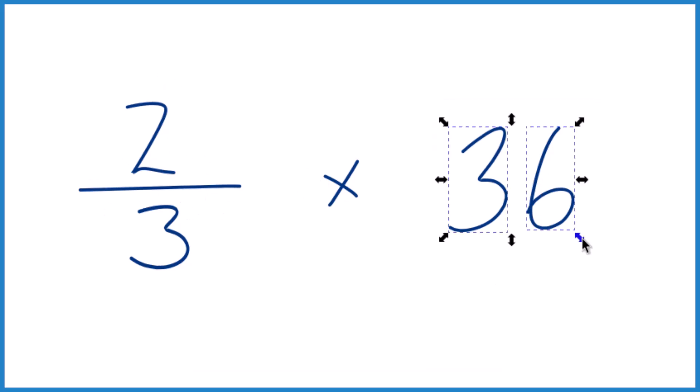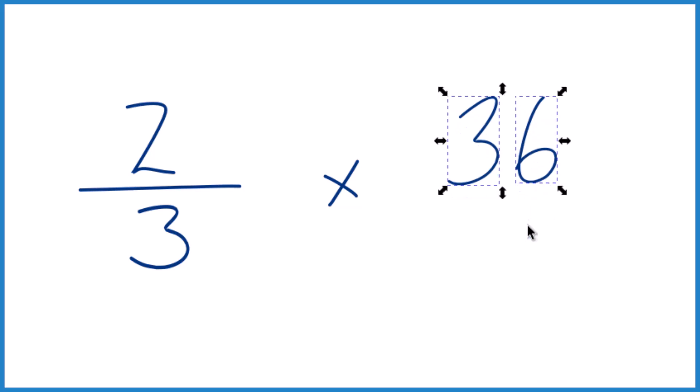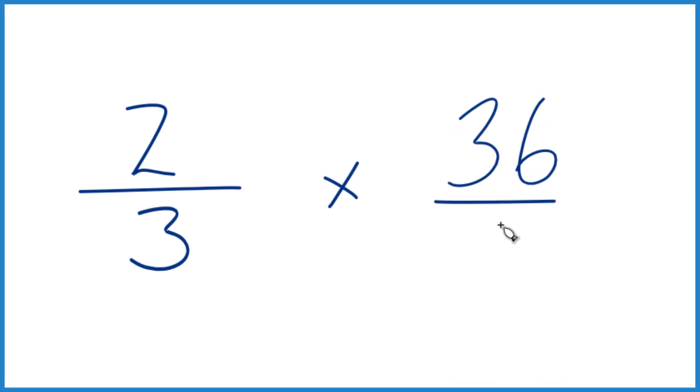I'd like to take that 36 and move it up a little bit and call it 36 over one. 36 divided by one, it's still 36, but now everything lines up.